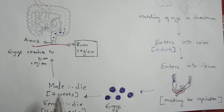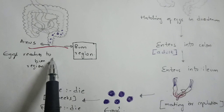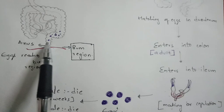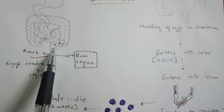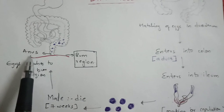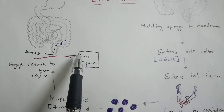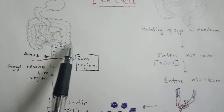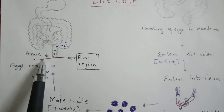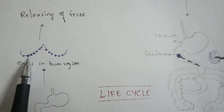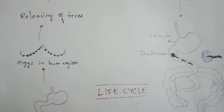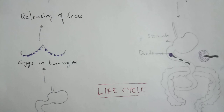After the male worm dies, the female worm also dies after 12 to 13 weeks. The eggs present at the last part of the large intestine travel towards the anus and are exposed to the perianal (bum) region. Due to this exposure of eggs at the anus, itching at the anus occurs, which is one of the main symptoms of enterobiasis.